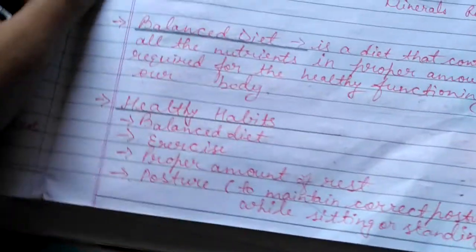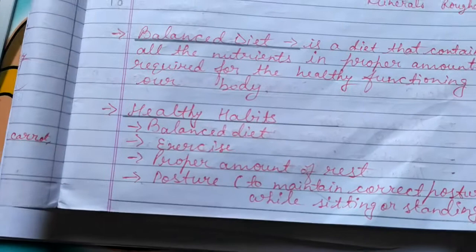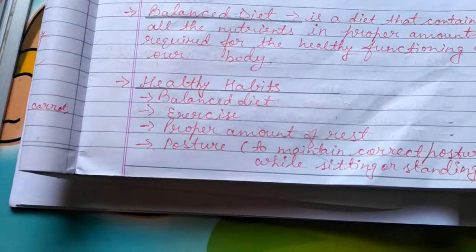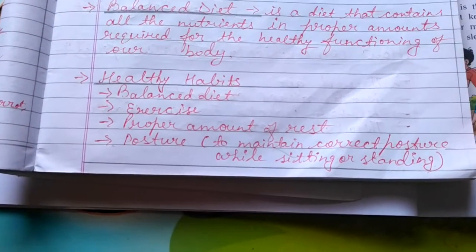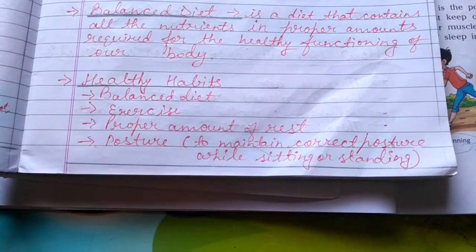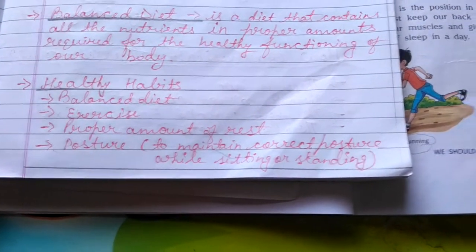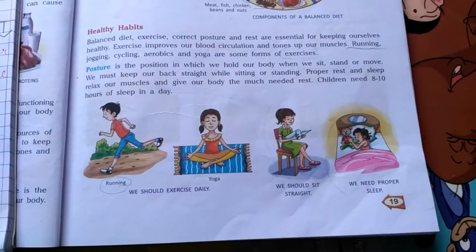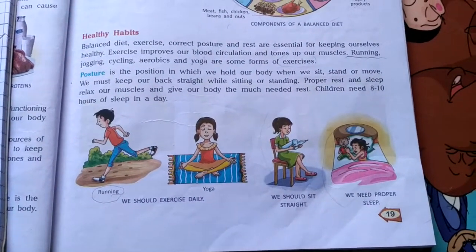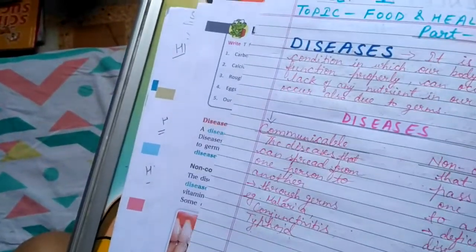We also discussed some healthy habits: we should take a balanced diet, do proper exercise, take proper rest, and maintain correct posture while sitting or standing, as depicted in these pictures. These were the healthy habits. Now let's move to the first book exercise.